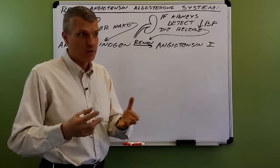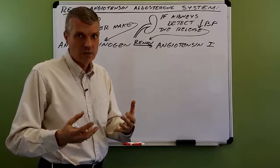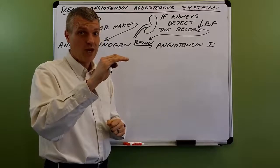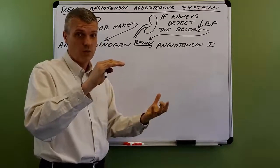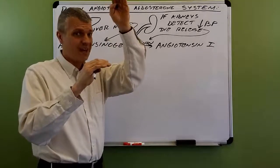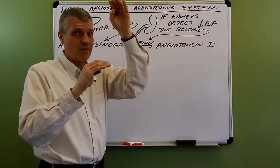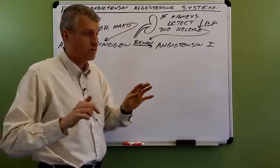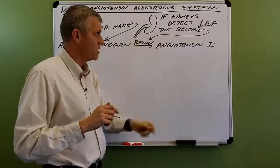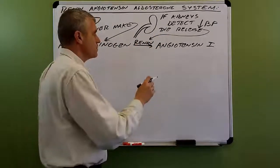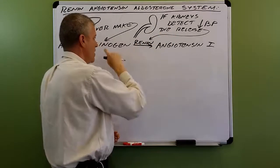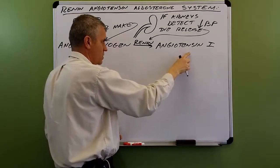The kidneys help keep water and electrolyte balance right, and also keep your pH balance correct. They need a certain amount of blood pressure to produce urine and do these important things. The kidneys are also sensitive to high blood pressure, which could damage them at the microscopic level. So the kidneys are very sensitive to blood pressure, making them key organs in maintaining blood pressure homeostasis. The kidneys make renin in response to low blood pressure, and renin converts angiotensinogen into angiotensin-1.